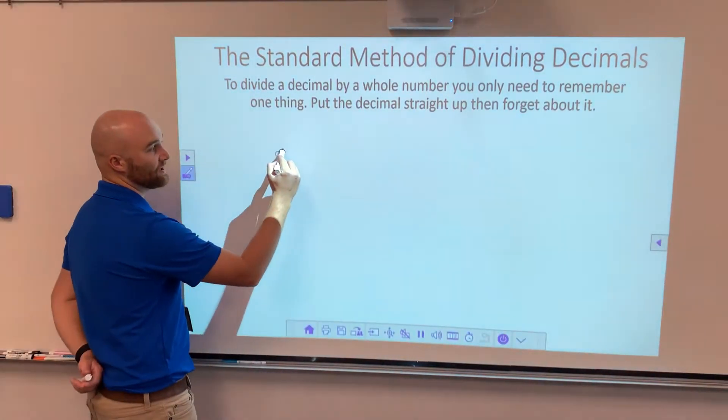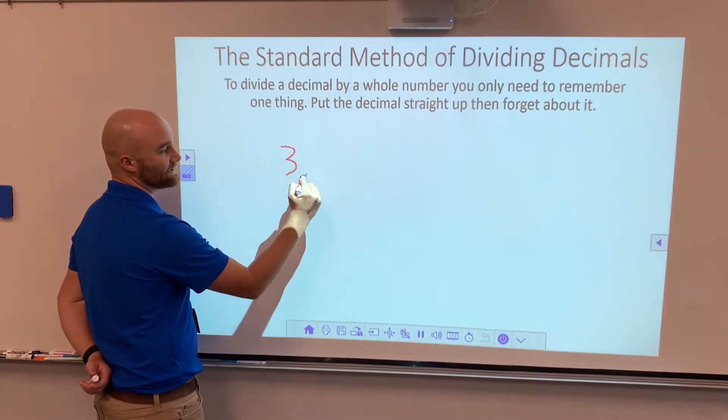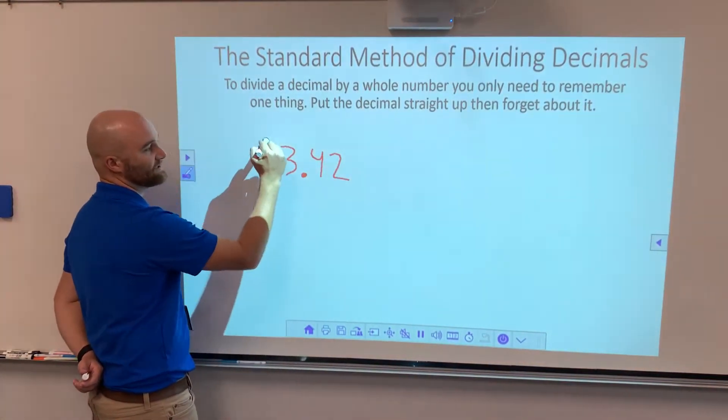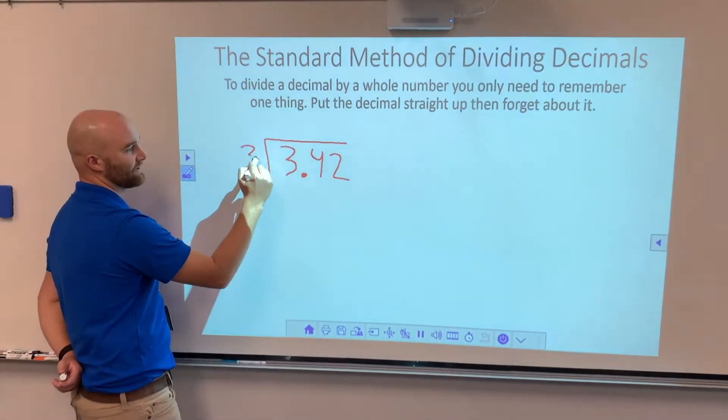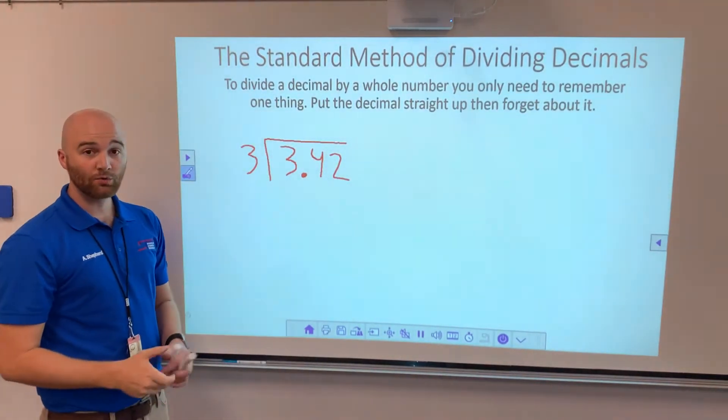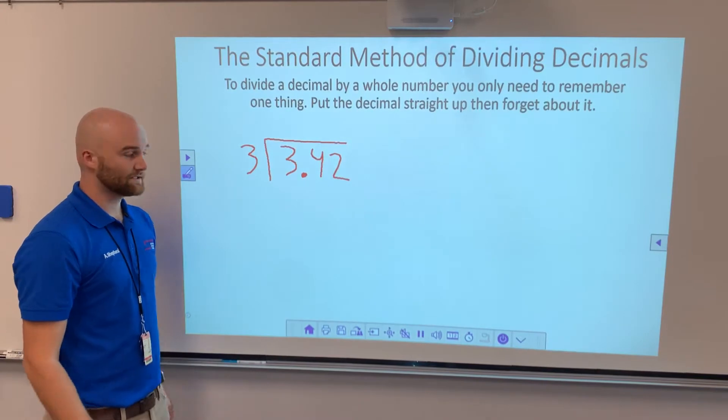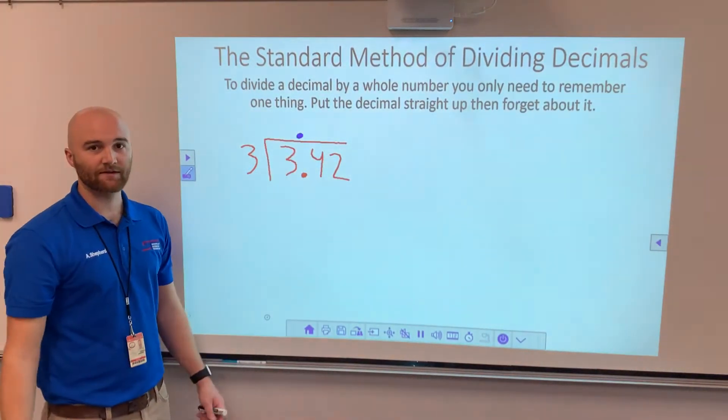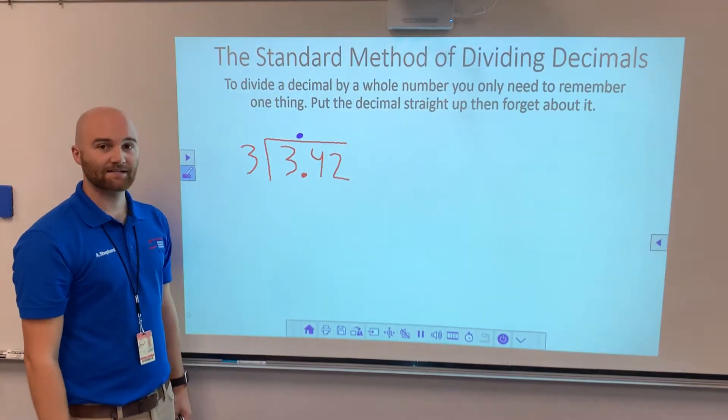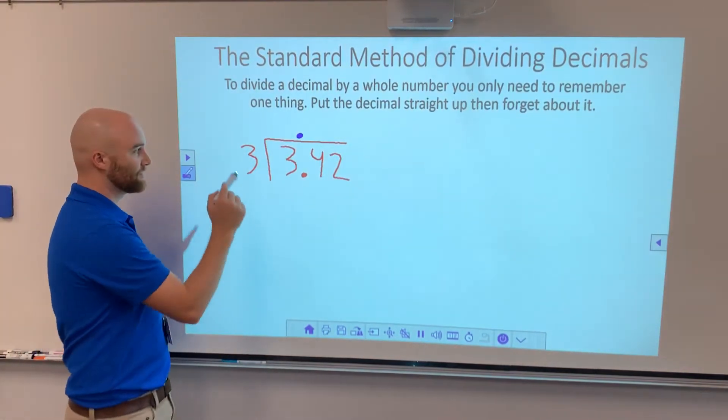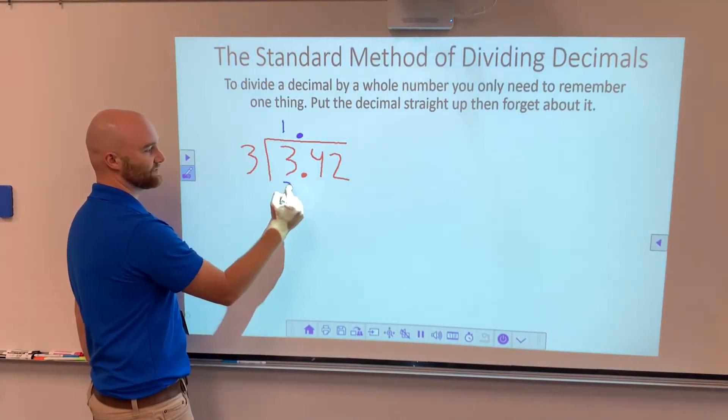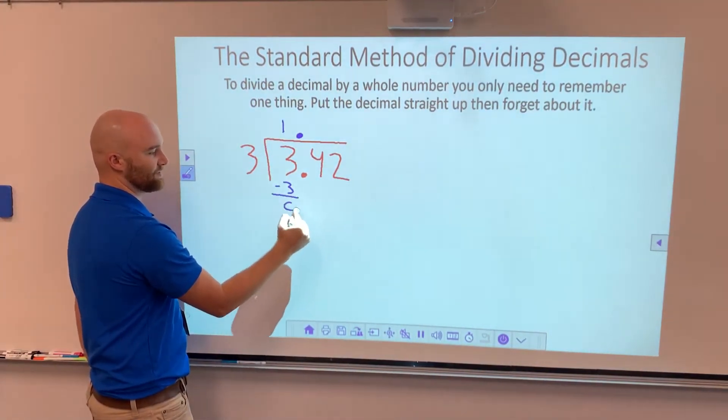So for example, if I wanted to do the number 3.42, and I wanted to divide that by 3, the only thing I have to remember that makes it different is I put this decimal straight up and I forget about it. It's as easy as that. I divide just like normal. 3 goes into 3 one time. 3 times 1 gives us 3. We do our subtraction. We have a 0 here.